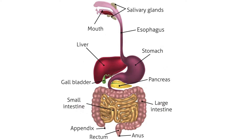The human digestive system is a tube-like system. It consists mainly of the mouth, esophagus, stomach, small intestine, large intestine, along with the rectum and anus. In addition, there are other organs which support the digestive system, defined as glands — salivary glands, liver, gallbladder, and pancreas.